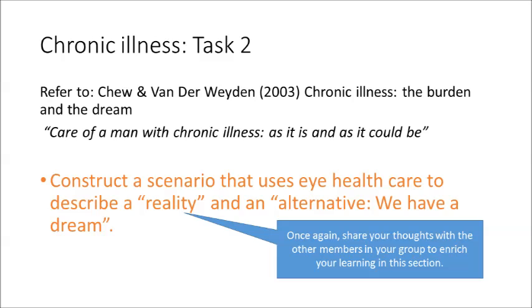Your next task — task two for chronic illness — is to use the example from the Chew and Van der Weyden editorial. You'll find the example on the second page, page 230, in a box called 'The Alternative: We Have a Dream.' Construct a scenario that uses integrated healthcare to describe both a reality and an alternative as described in that box. Note: if you choose to use an example from your own clinical experience, please de-identify the patient, the clinicians, the practice, and the hospital to keep it completely confidential.